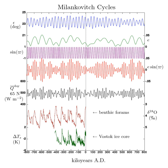Greater eccentricity increases the variation in the Earth's orbital velocity. However, currently, the Earth's orbit is becoming less eccentric. This will make the seasons more similar in length.